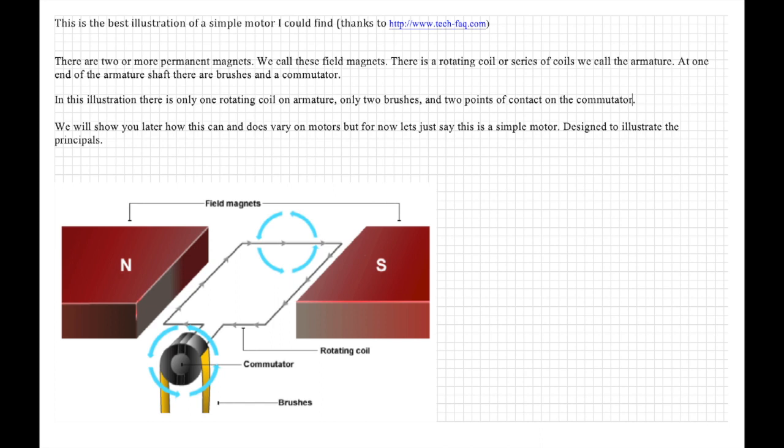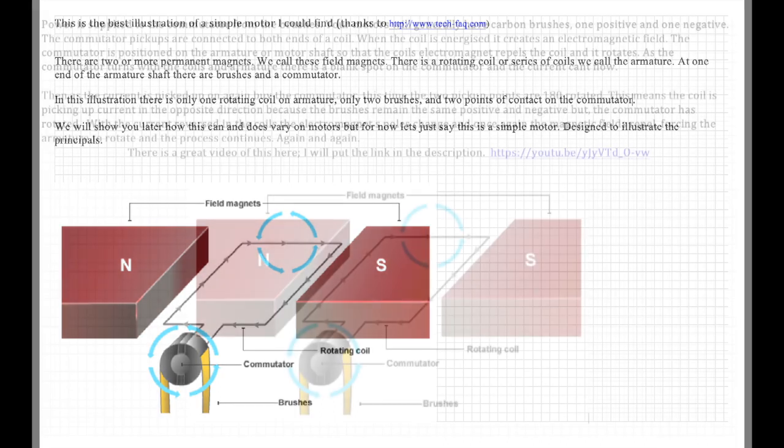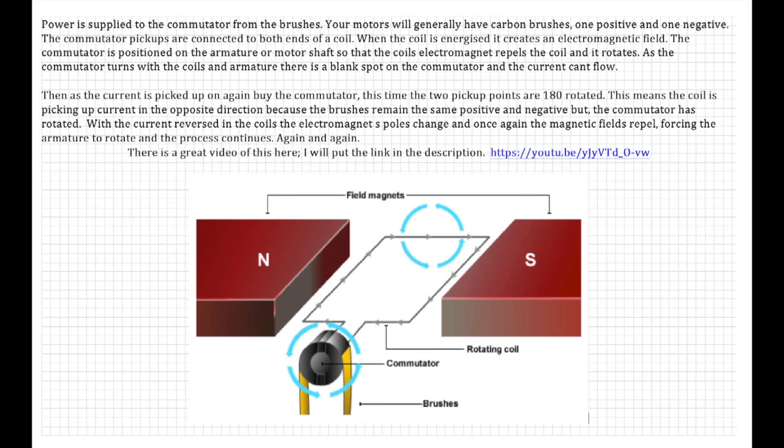There are two permanent magnets we call field magnets. One has its north pole facing in and the other its south pole. Then there's the rotating coil which is wound around an armature, and then finally the commutator and the brushes. In this illustration there is only one rotating coil on the armature, only two brushes and two points of contact on the commutator. That's because it's a simple electric motor. We'll show you later how this can and does vary on motors, but for now let's just say this is a simple motor designed to illustrate the principles.